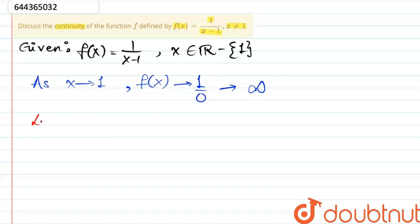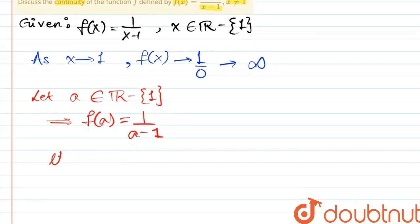Let us consider any other real number a which will not be equal to 1. This means that f(a) will be equal to 1/(a-1). Now the limit as x tends to a from the left hand side of f(x) will be equal to the limit as x tends to a of 1/(x-1), which will be equal to 1/(a-1). We can apply the limit since a is not equal to 1, so it won't be an indeterminate form.